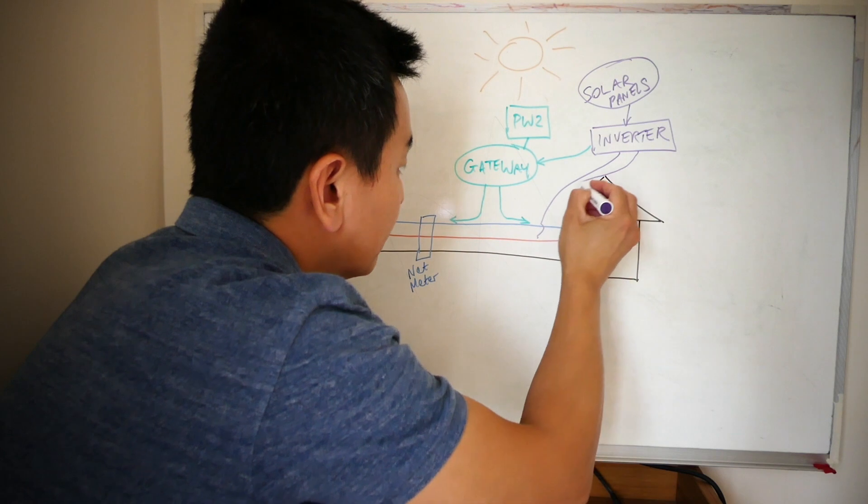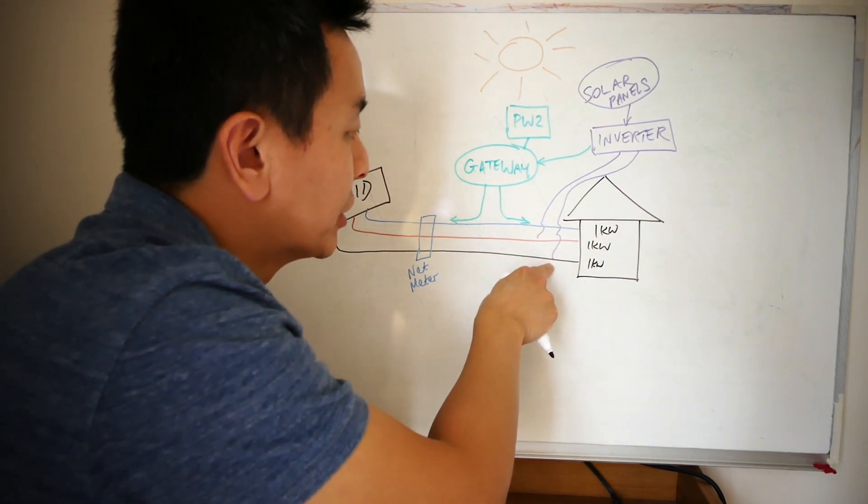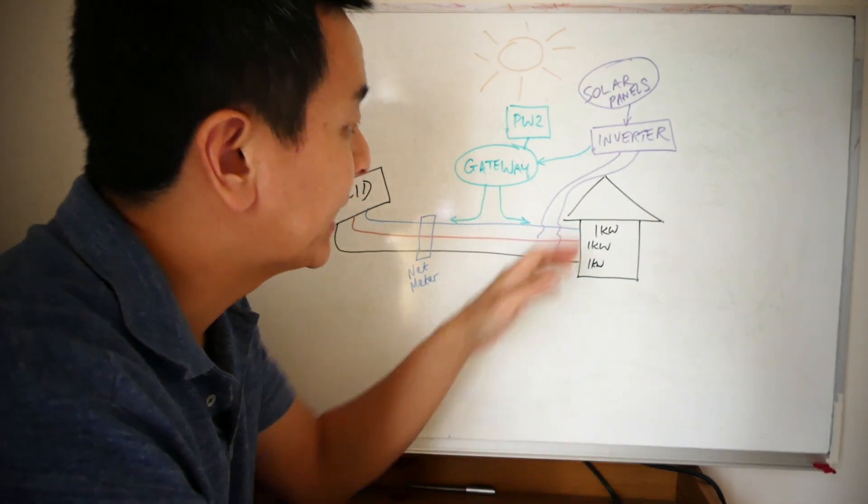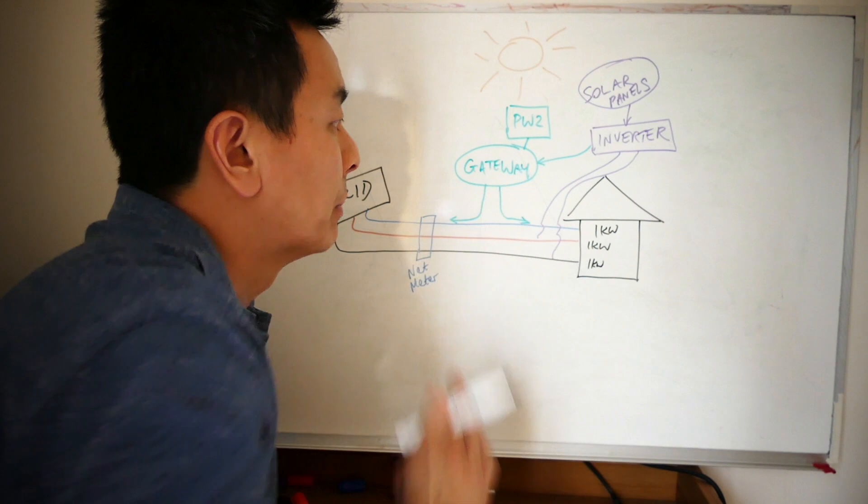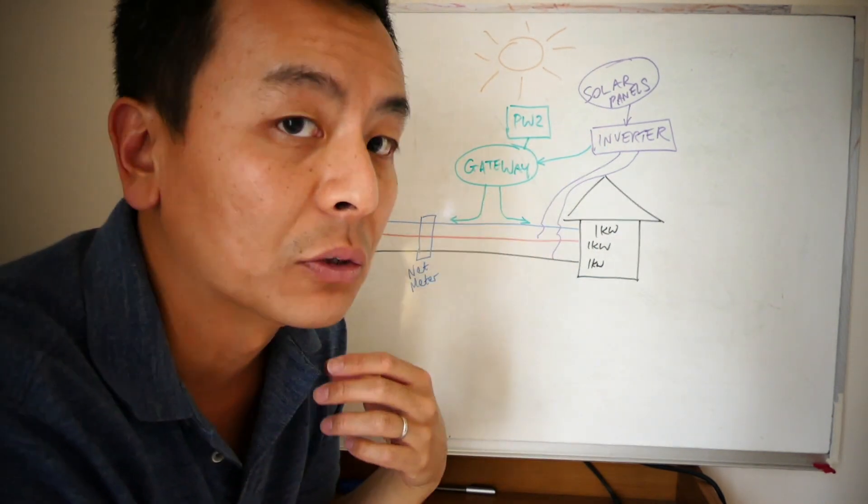Same with this one here: second phase going to this one, third phase going to that one, and the first phase goes to the gateway. So in reality, you're only going to get one third of the load from the solar panels charging your Powerwall 2. Not ideal, unless you've got a massive solar array, of course.